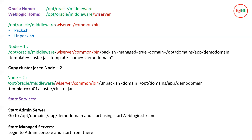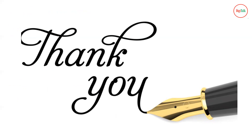Now you have to start your services. Start your admin server from node 1, since the admin server is on node 1. To start your managed servers, since we have configured node managers and machines, you can control them from the console easily. Go to your admin console, click on Servers, click the Control tab, select both managed servers, and click Start. Thank you for watching this video — if you found it useful, please like and subscribe.